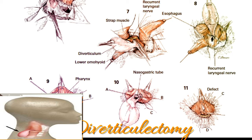A two-layer closure of the diverticulum is begun. The first row of interrupted 0000 sutures is placed longitudinally to invert the mucosa with the knot tied on the inside of the esophagus, with gentle traction used on the diverticulum to enhance the exposure. The diverticulum is gradually excised as the closure progresses. Then a second row of horizontal sutures closes the muscular defect between the inferior constrictors of the pharynx and the cricopharyngeal muscle below; these muscles are brought together by interrupted 0000 sutures.